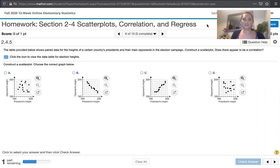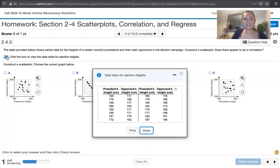So I wanted to make this video to show you how to construct a scatter plot using Excel. It says, click the icon to view the data table for election heights. So we can look at it here, but if you select this button here, it says click to copy table. I'll click that and then I will open it in Excel.